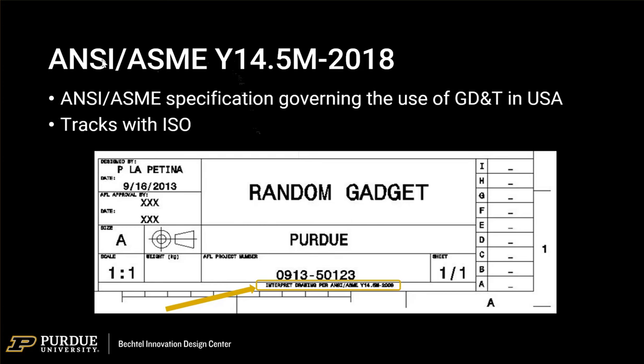GD&T is controlled by the standard ASME Y14.5M, revised every couple of years — there's a 2020 or 2021 revision expected. It tracks with an ISO standard and they run in parallel lockstep, overseen by functionally the same board that gathers industry feedback and makes careful deliberate revisions. The language of the standard is in plain English — it's hard and takes concentration, but it's well worth getting a book on how to work with this stuff.